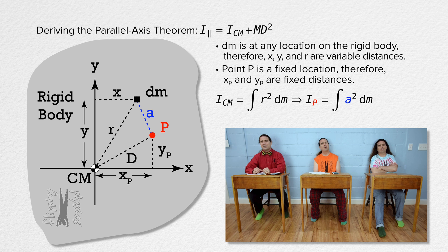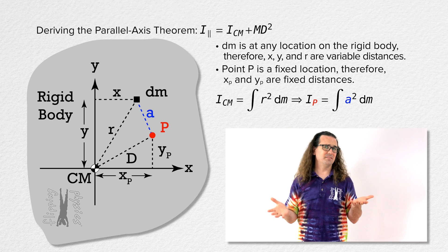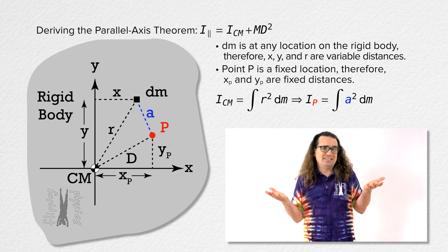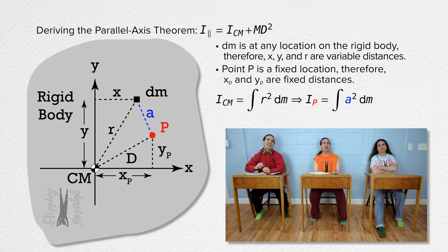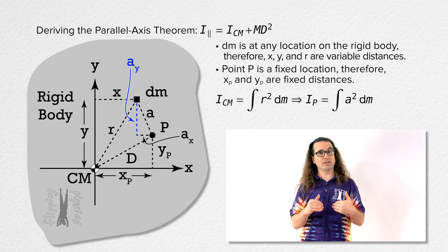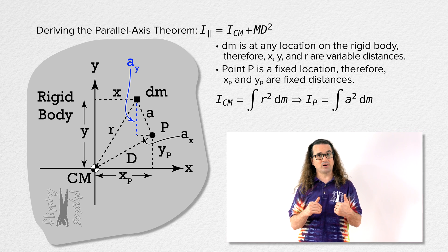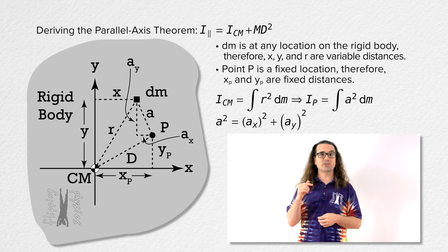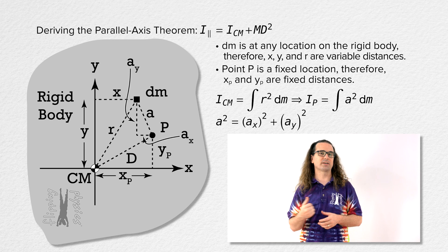Why the letter A? There are a lot of letters here and A has not been used yet. Now, A has components in the x direction and in the y direction such that, according to the Pythagorean theorem, A squared equals A in the x direction squared plus A in the y direction squared.